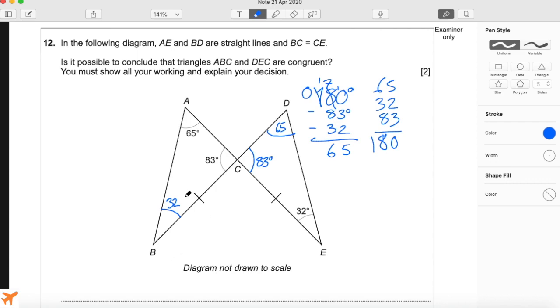We have an angle, a side, and another angle for triangle ABC. For triangle DEC, we have an angle 83 degrees, the same as this one. We have a side of the same length—we know that from the question BC equals CE, and also this perpendicular line gives it away. And we have another angle, 32 degrees.